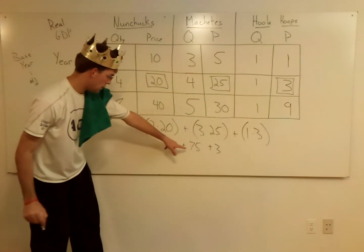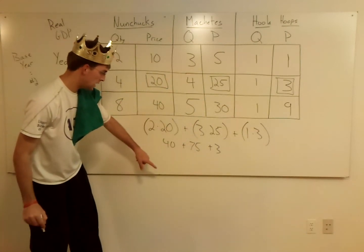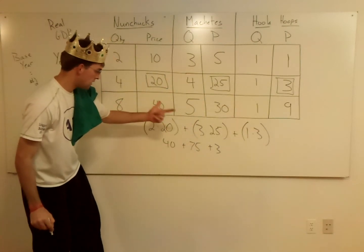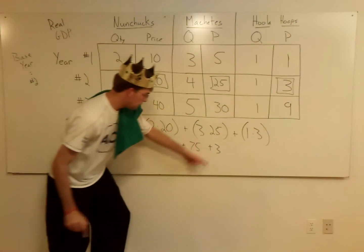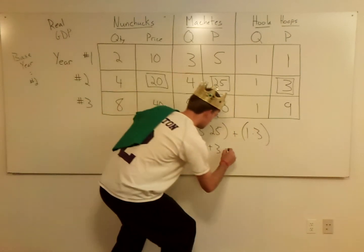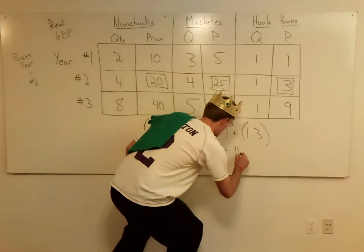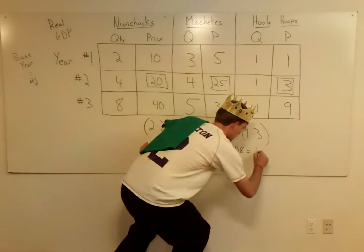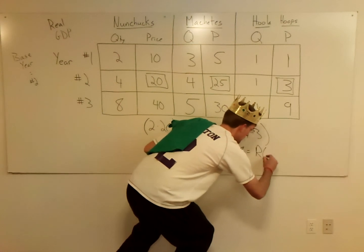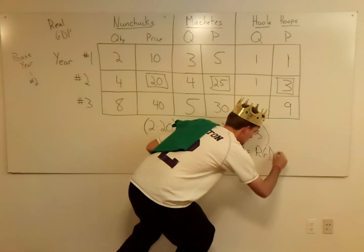So I've got 40 plus 75 plus three. Let me do the math: 40 plus 75 is 115, plus three gives me 118. This equals real GDP year number one.